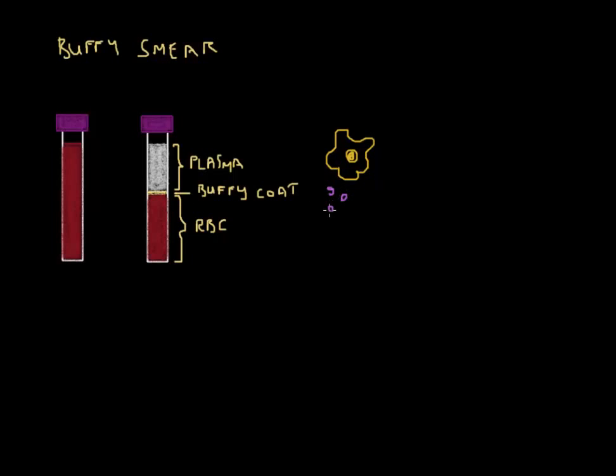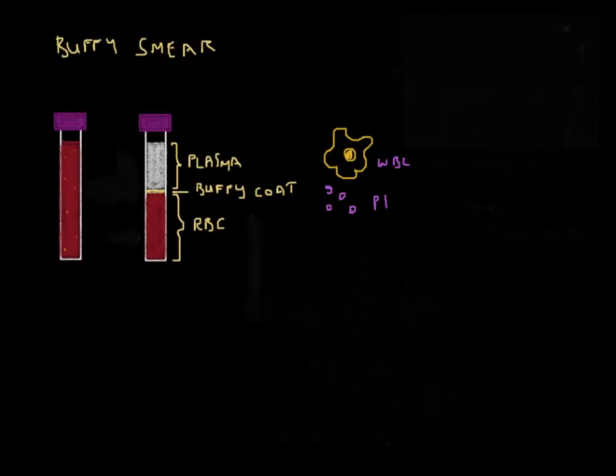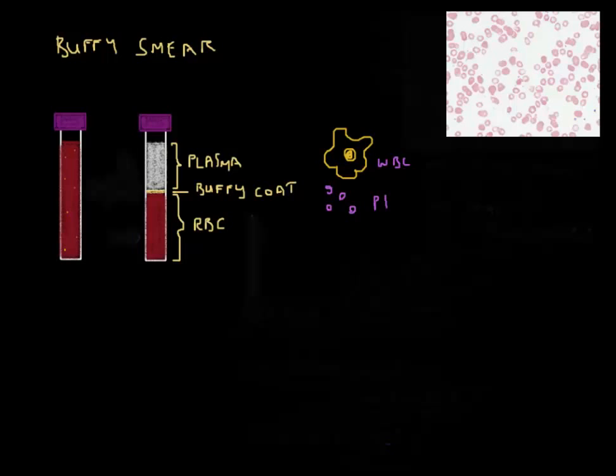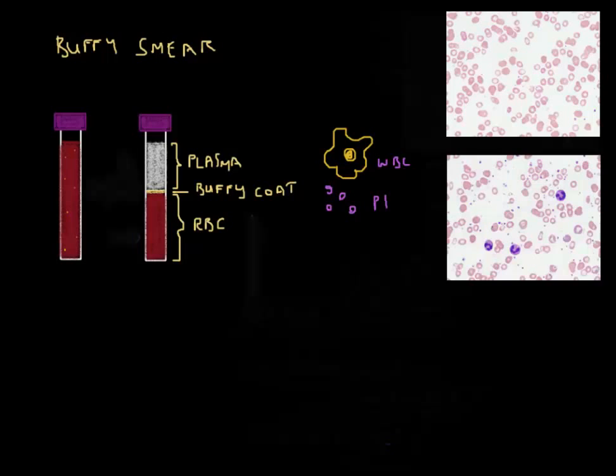Let's see what was actually seen under the microscope. Just to remind you, this was the initial blood smear. As you would remember, quite a lot of red blood cells and platelets visible spread out, but you could see no white blood cells. Then this is one of the buffy smears that were made.